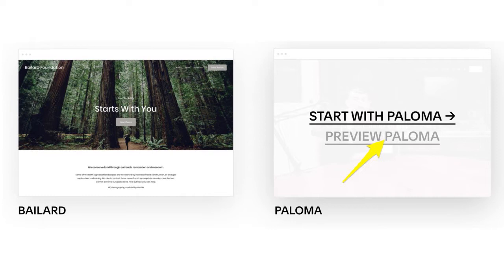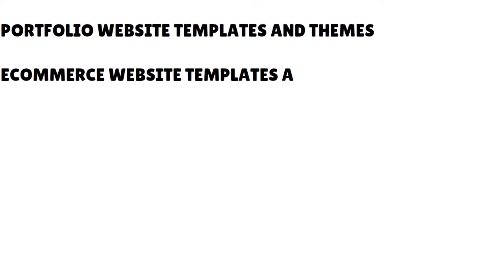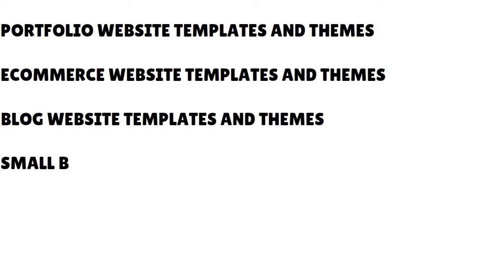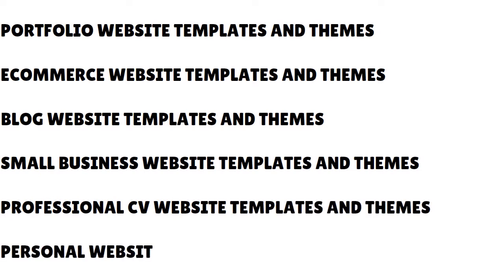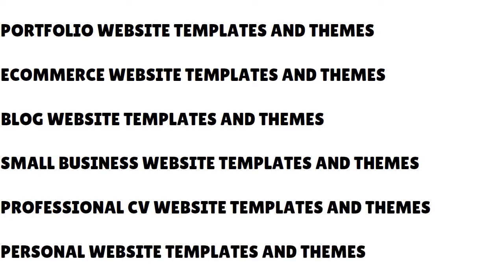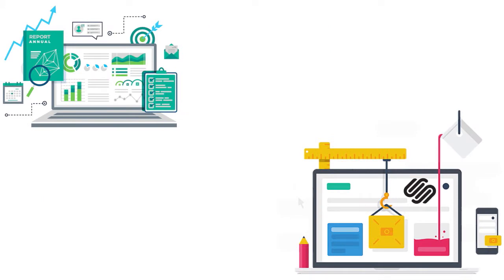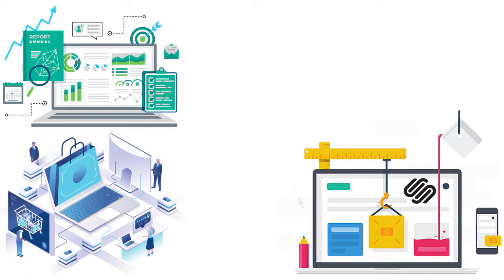You can see on the screen the difference between Baylor and Paloma, for instance. You can preview everything and choose your templates based on your needs — portfolio website templates, e-commerce website templates, blog website templates, small business website templates, professional CV, and personal websites. A lot of people think you have to sell something on Squarespace, but you can just use the platform to build a personal website or a professional CV website. You don't have to be in e-commerce to use Squarespace.